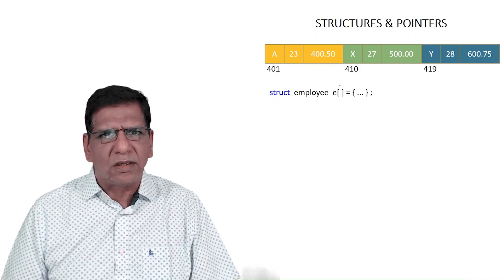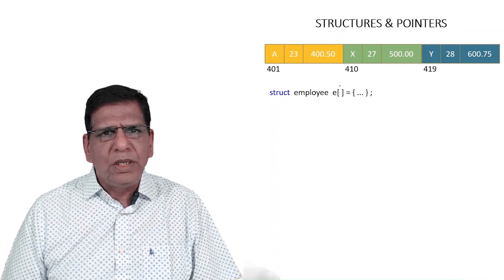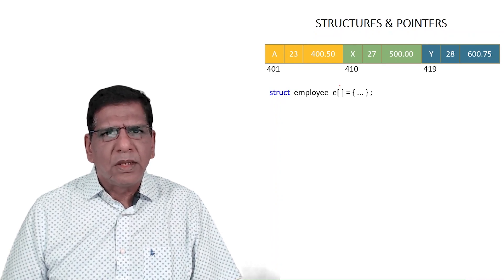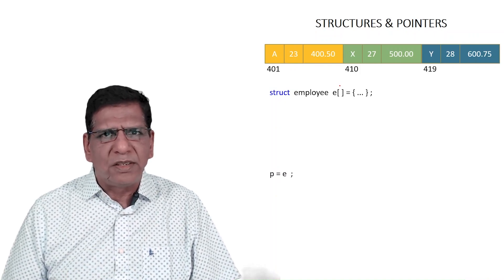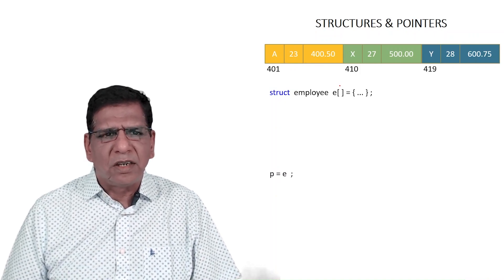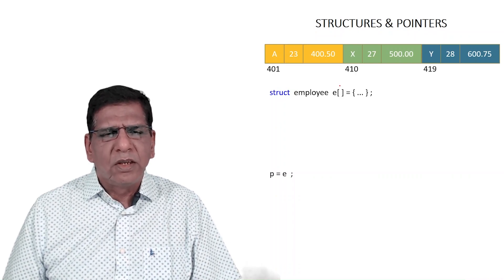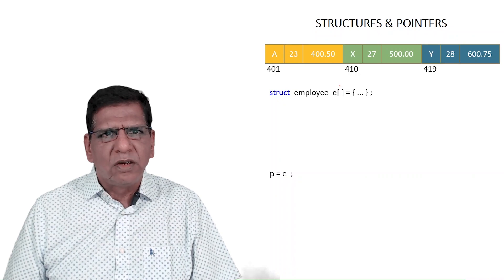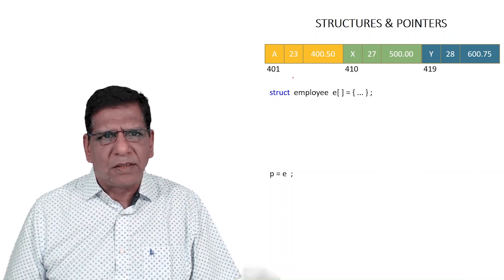Now if I do P equal to E, E being an array, if I mention its name I'm bound to get its base address. The base address of the array is 401. So in P what would get stored is 401, then I do a P++.